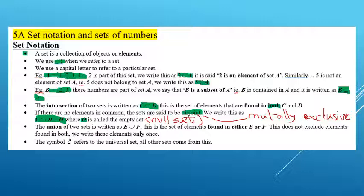Next is the union. We use the upside-down intersection symbol, which is the upside-down U — the union looks like a U, U for union. So the union of two sets written as E union F is the set of elements found in either E or F. This does not exclude elements found in both — we write those elements only once. The universal set is the set from which all other sets come, and how big it is depends on the context of the problem.